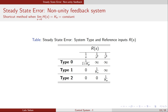Once you have the error constants, you can find the steady-state error for different systems and different kinds of reference signals. This table gives the relation: for a unit step input with a type 0 system, the steady-state error is 1/(1 + Kp). For a unit ramp input with a type 1 system, it is 1/Kv, which is a constant. For a unit parabolic signal with a type 2 system, the steady-state error is a constant equal to 1/Ka. The conditions for zero and infinite steady-state error can be visualized from this table.